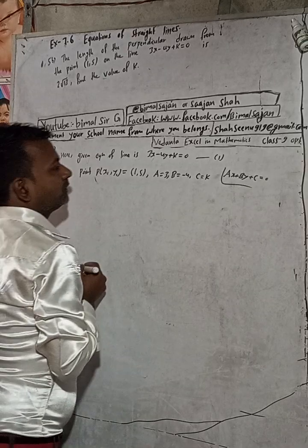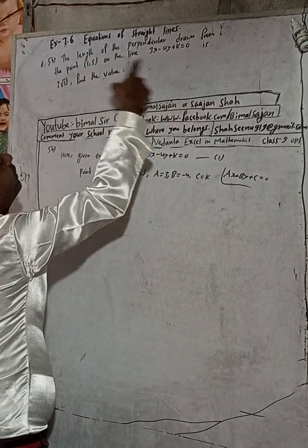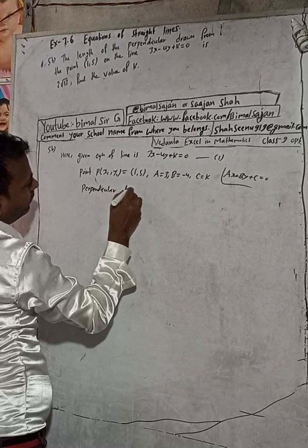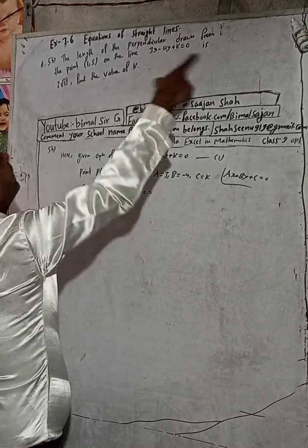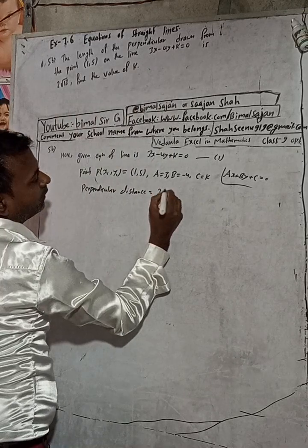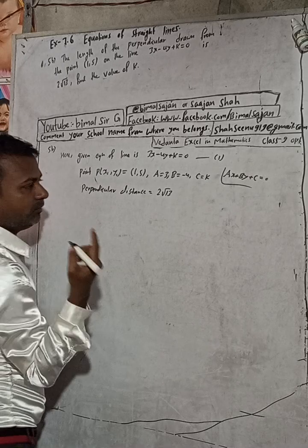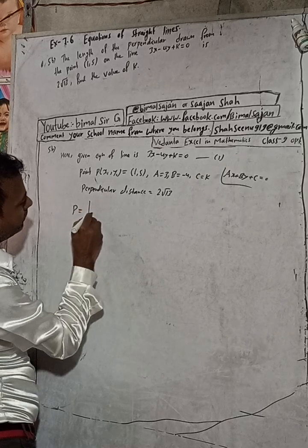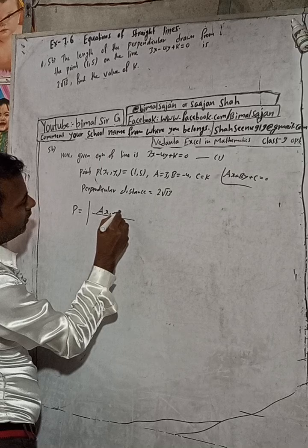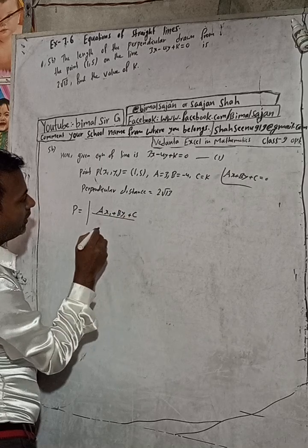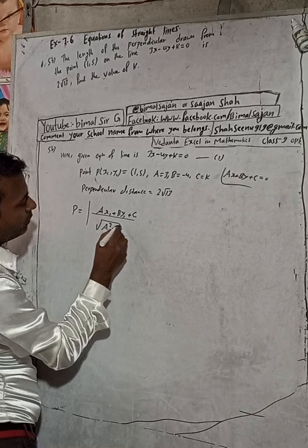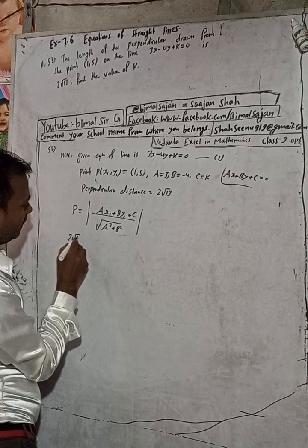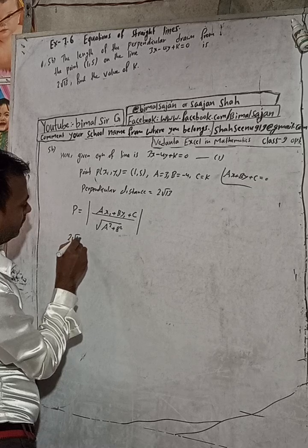The length of the perpendicular — the perpendicular distance — is given here as 2√13. So p (or d), the perpendicular distance, is equal to the modulus of ax₁ plus by₁ plus c, divided by the square root of a² plus b². And p equals 2√13.